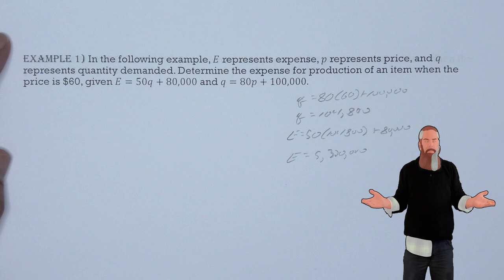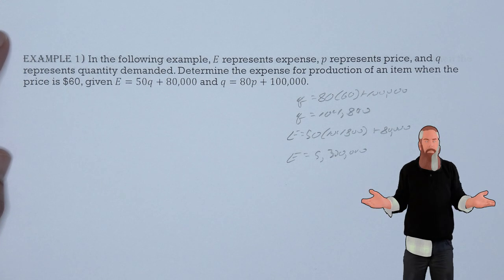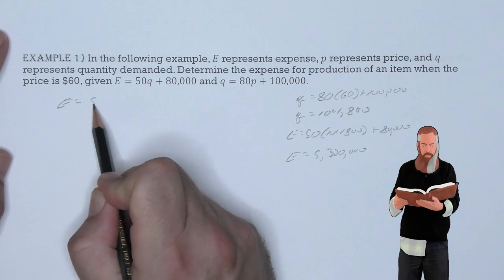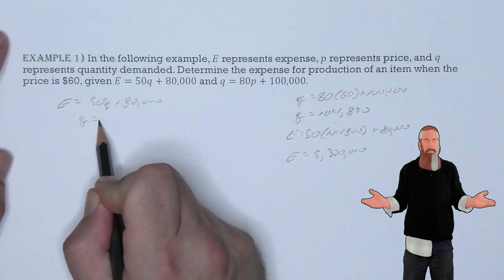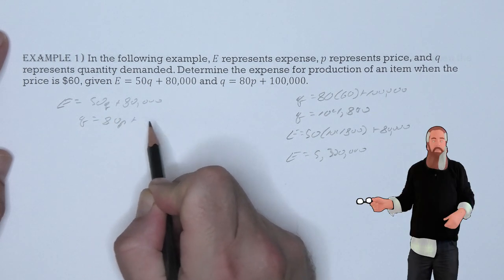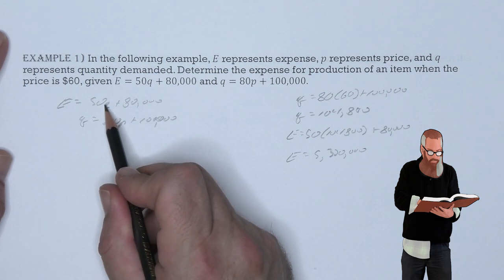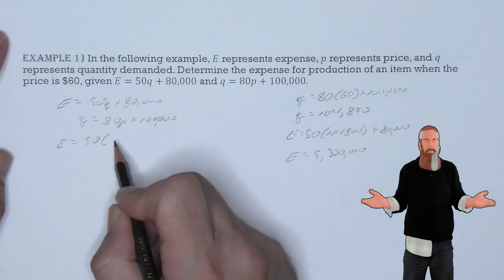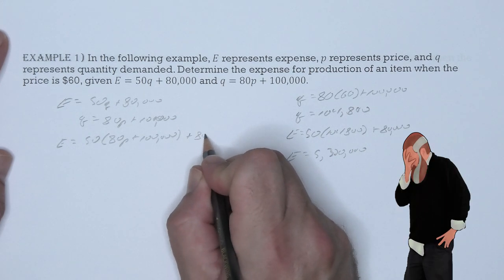The second method of substitution, the value of Q in terms of P, into the expense function, and then uses the price given to find E. Meaning E being 50Q plus 80,000, and Q being 80P plus 100,000. We substitute Q into P, giving us E is 50 times 80P plus 100,000 plus 80,000.